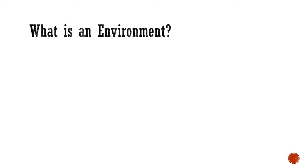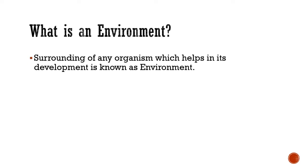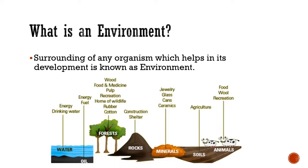Now the question is, what is an environment? We can define environment as the surrounding of any organism which helps in its development, growth, or survival. For example, water surrounding any organism helps in its growth or development. Forest provides home or shelter to varieties of animals, and also plays a very important role in the carbon cycle.